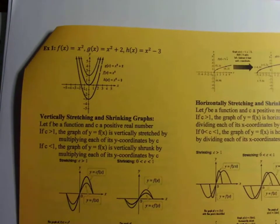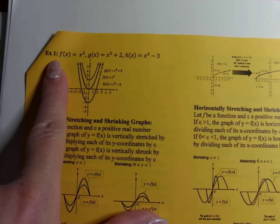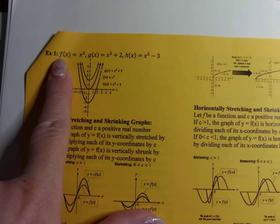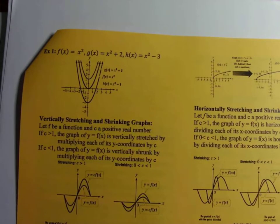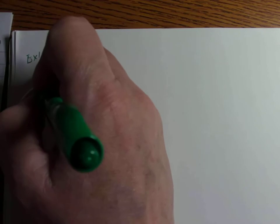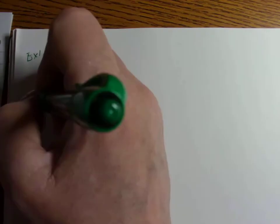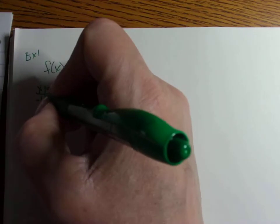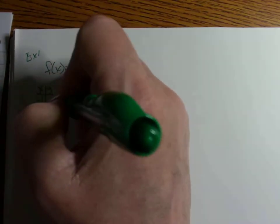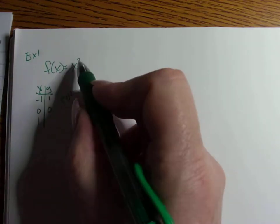Our first example has three functions: f(x) = x², g(x) = x² + 2, and h(x) = x² − 3. For f(x) = x², I'll make a t-chart using x values of negative one, zero, and one. Negative one squared is one, zero squared is zero, and one squared is one.